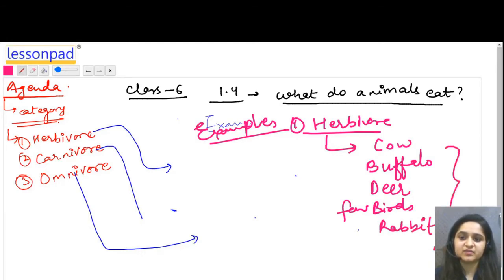Carnivore examples are tiger, lion, fox, and wolf. These are all examples of carnivore.